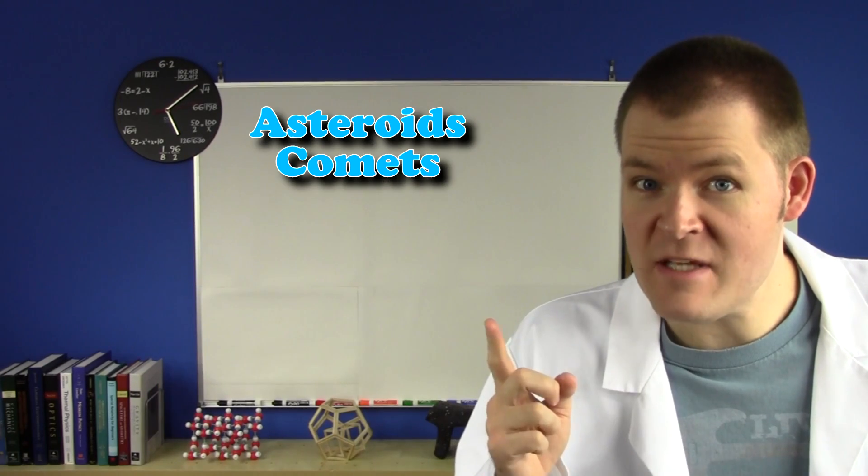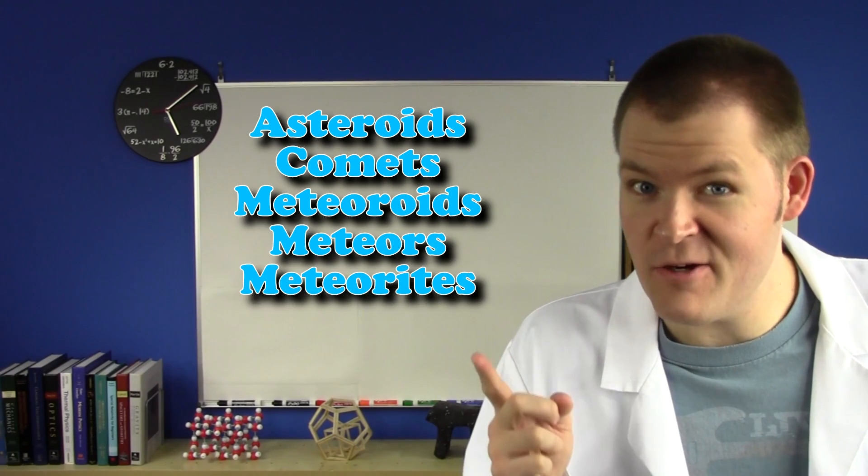I'm going to show you these things in order from smallest to largest. First, asteroids, comets, meteoroids, meteors, and meteorites. I put all these together because they're all basically the same thing. It's the leftover junk from when the solar system was made.